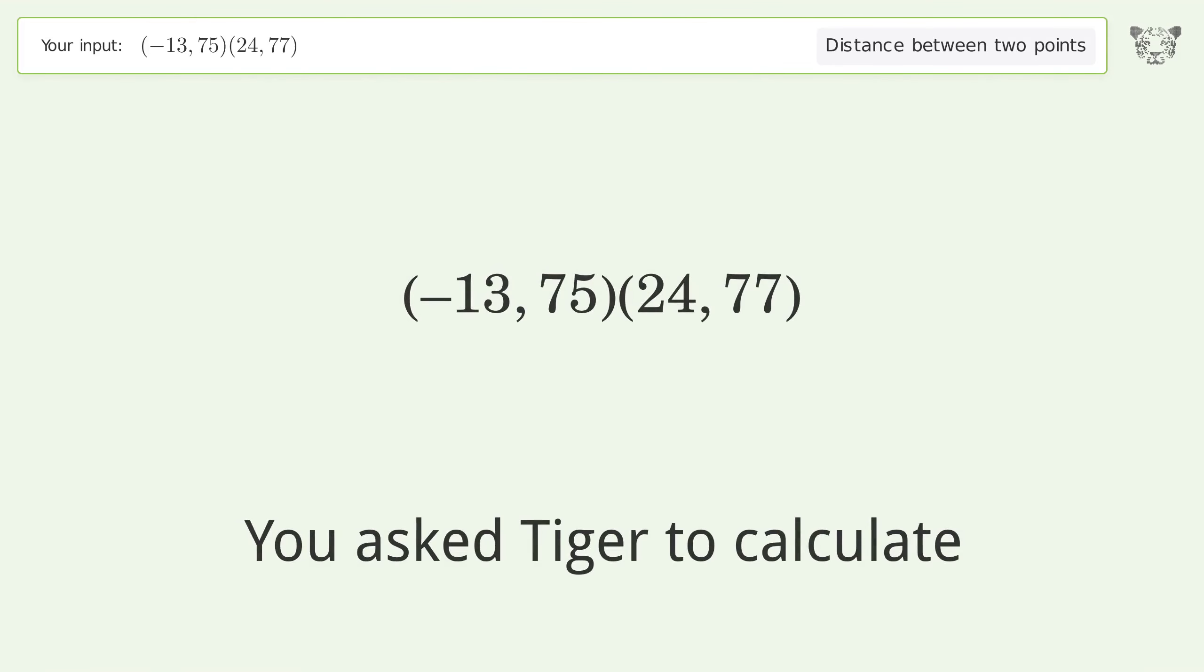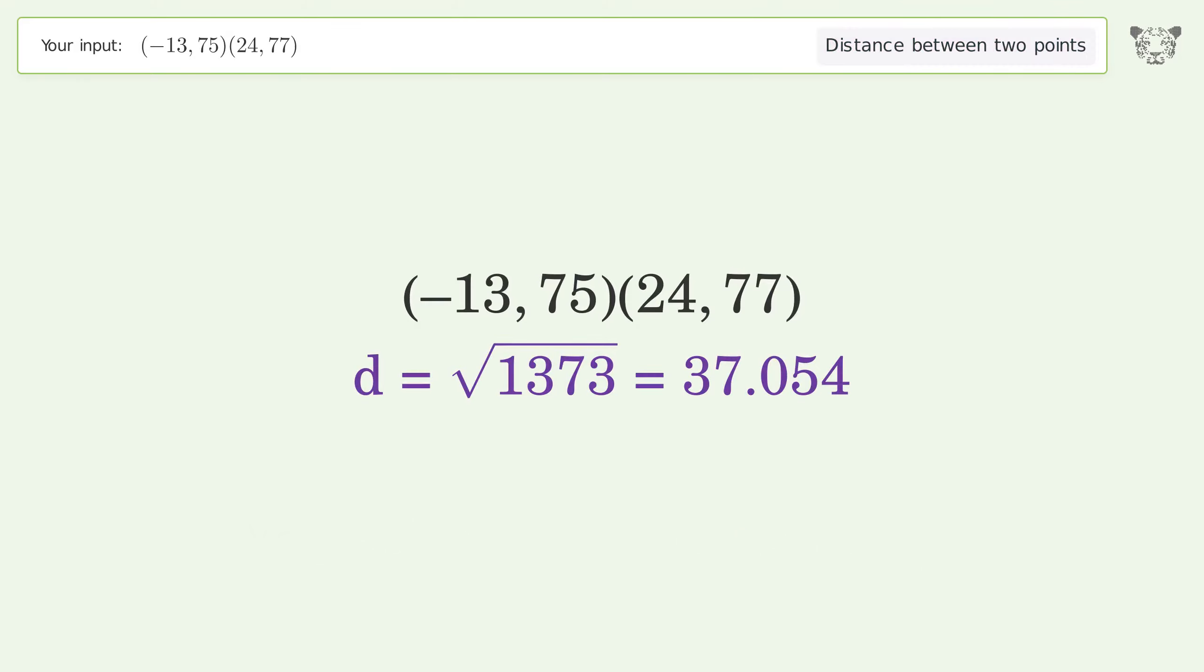You asked Tiger to calculate the distance between two points. The distance between the two points is the square root of 1373 or 37.054.